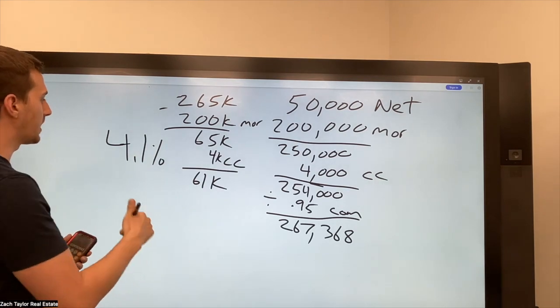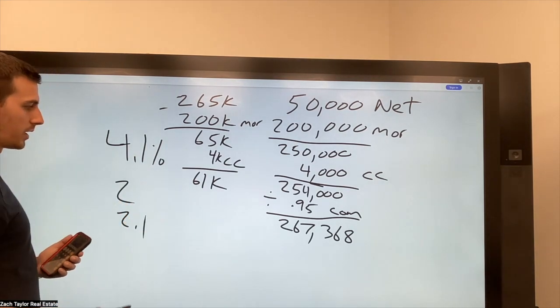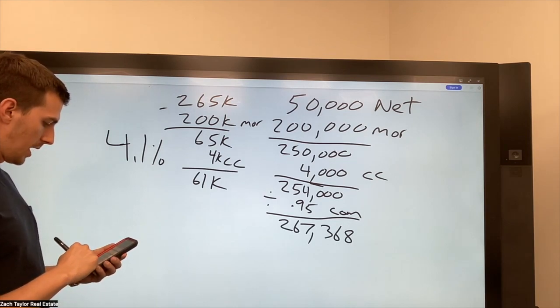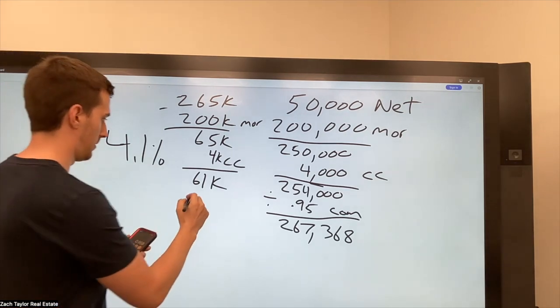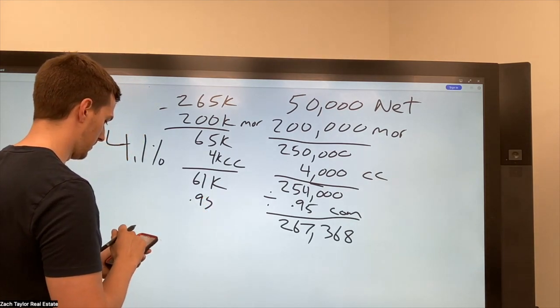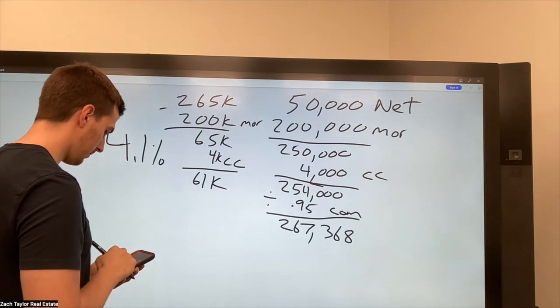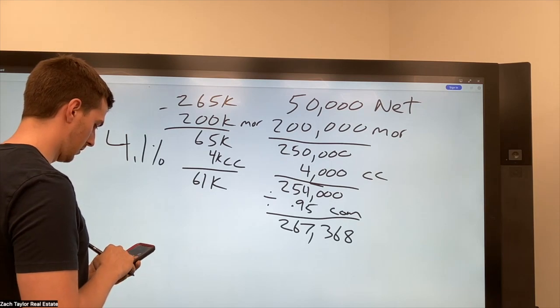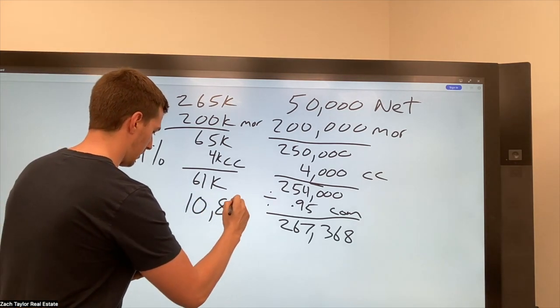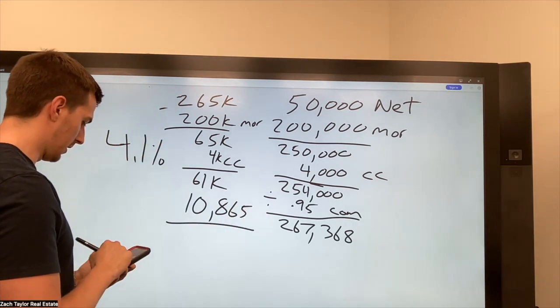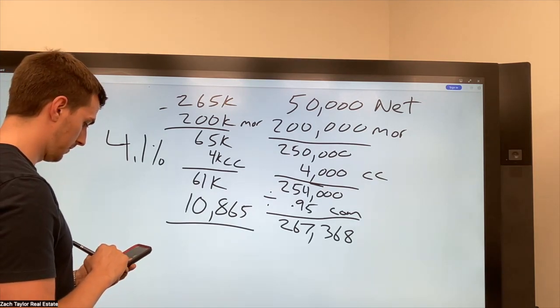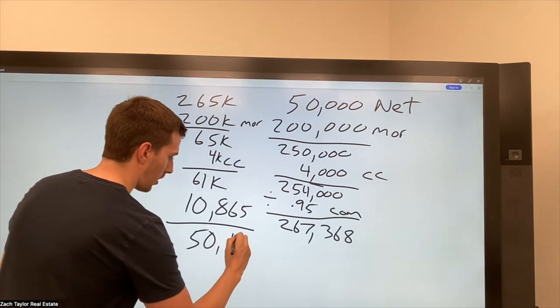So I could secure the listing. I could offer 2% to a buyer's agent, and maybe I keep 2.1 and everybody's happy. So if I do a 4.1%, I would have 265 times 0.959. This would equal 10,865 in costs. So I minus that from 61, which gives us 50,135.